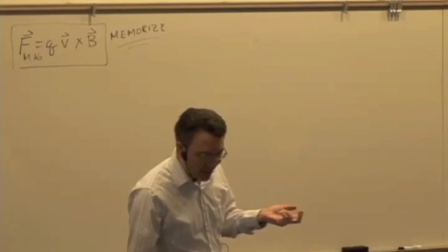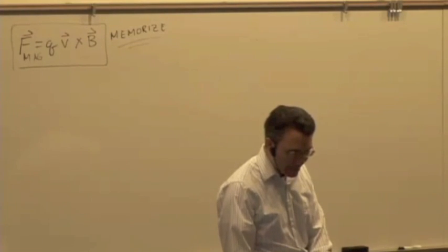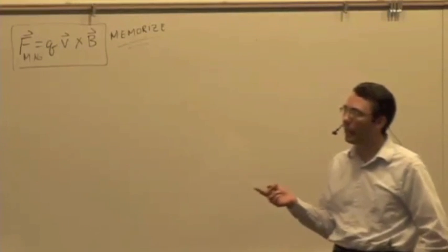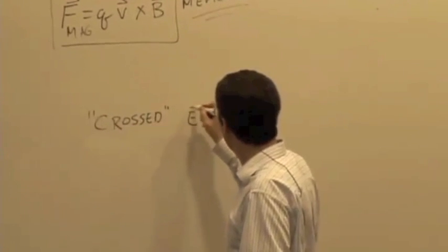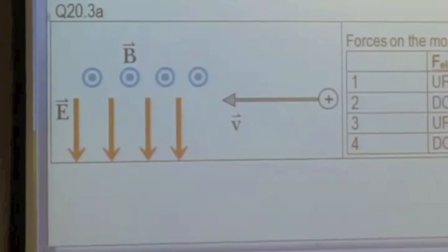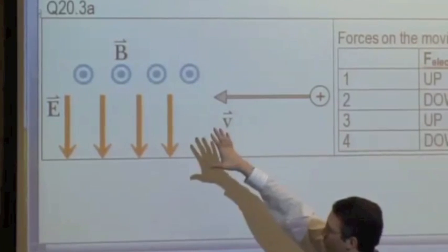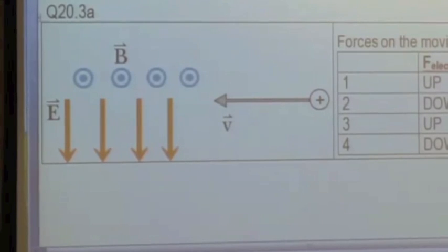We're going to start talking about the ability to think about electric and magnetic effects on a single moving charge. One particularly useful application is a situation called crossed electric and magnetic fields, where you have a magnetic field pointing out and an electric field pointing down — at a 90-degree angle to each other. We send a positive charge moving through this region, where the velocity is perpendicular to both of those fields.